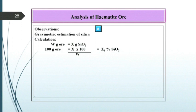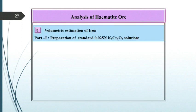Calculation: W gram ore corresponds to X gram of silica, so 100 gram ore corresponds to (X × 100) / W = Z1 percent of silica. Part B is volumetric estimation of iron.